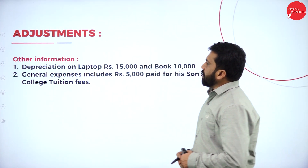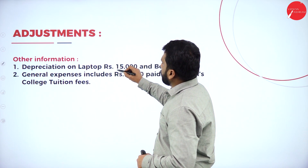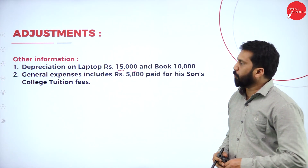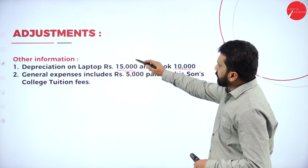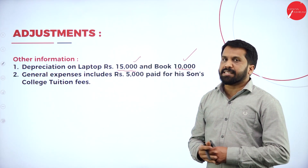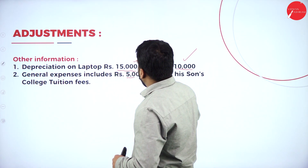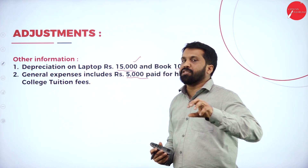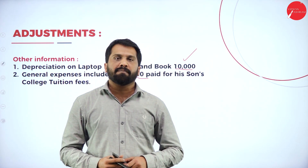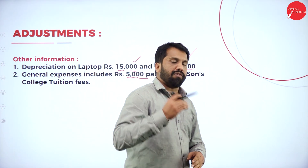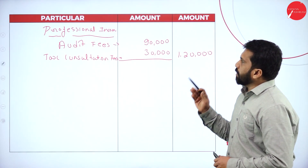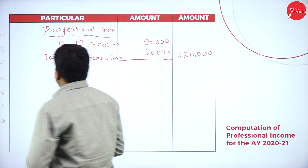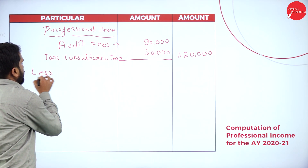Adjustments: depreciation on laptop is 15,000 and on books is 10,000. General expenses include 5,000 paid for son's college fees — while writing general expenditure, we are supposed to remove 5,000 because that is personal. Hope you are clear. Now we'll go to the expenditure calculation.